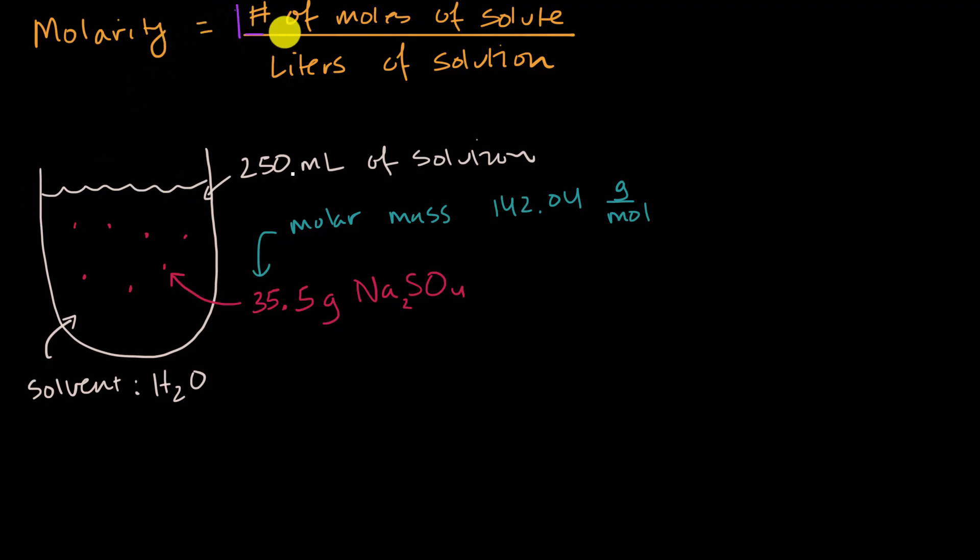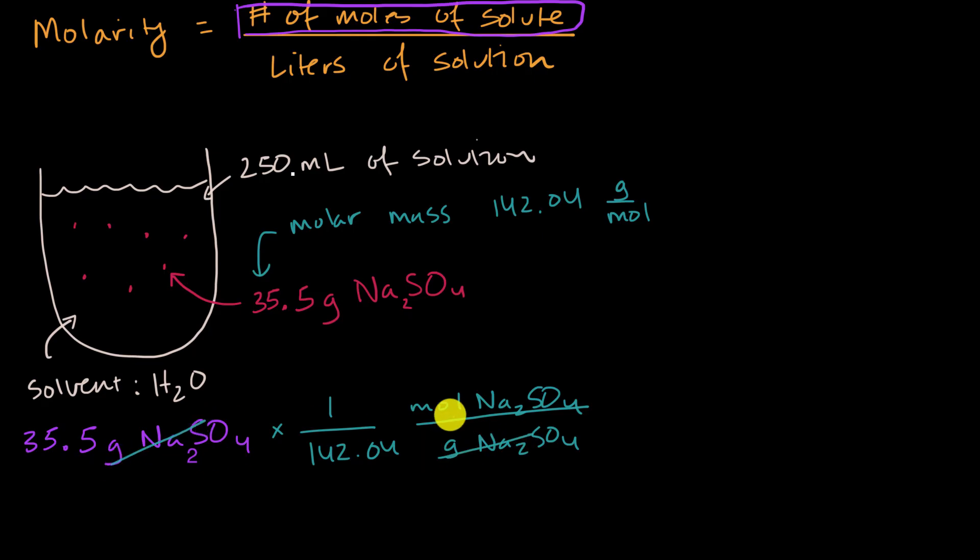So first, we want to figure out the number of moles of solute. We can start with the mass of solute that we have right over here. So we have 35.5 grams of sodium sulfate. And now if we want to figure out the number of moles, I'm going to multiply this times something that would cancel out the grams. So I don't want grams per mole, I want moles per gram. So I could multiply this times, for every one mole of sodium sulfate, Na2SO4, we have 142.04 grams of sodium sulfate. And you can see very clearly that that will cancel with that, and we're left with moles of sodium sulfate.